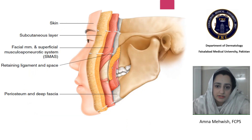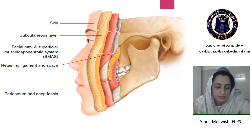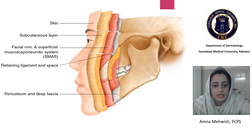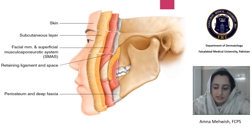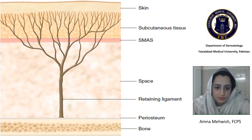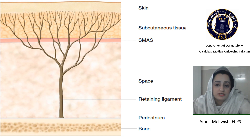This same layer continues from the scalp towards the face. There are deep fat compartments and ligaments of the face that become lax with age, leading to drooping and sagging because of loosening of the ligaments and herniation of the fat. The retaining ligaments maintain the elasticity and vitality of the skin, and their laxity over time leads to facial aging changes.